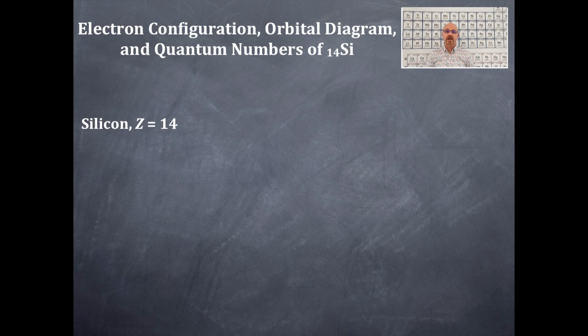You're going to walk yourself through the periodic table counting 1 through 14 and find 14 — it's Si for silicon.